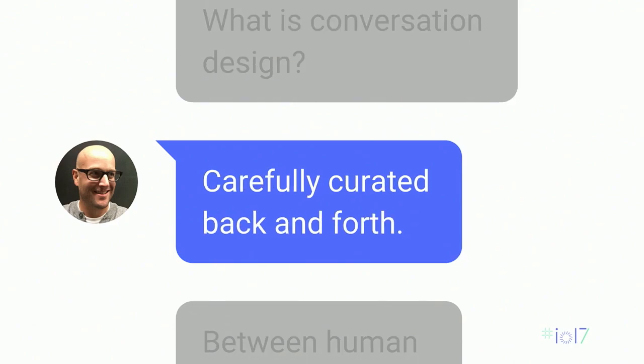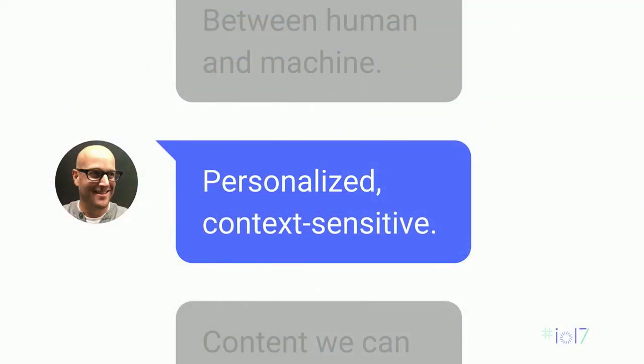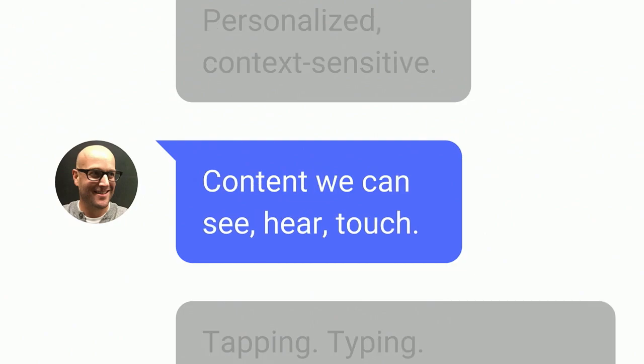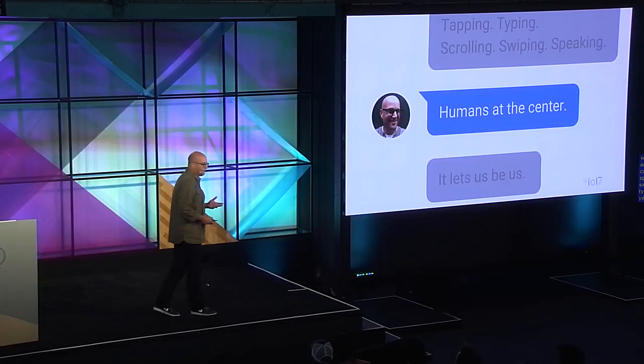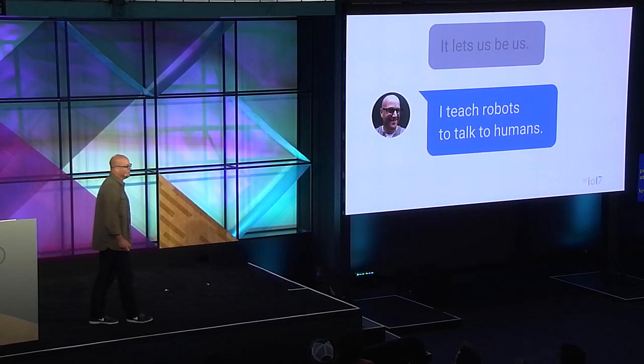A question I get a lot: what is conversation design? For me, conversation design is a carefully curated back and forth between human and artificially intelligent machine. It generates a personalized and context-sensitive experience around tasks and content — content we experience in a very visceral way. It's an immersive experience filled with things we can see, hear, and touch, content we can interact with and control by speaking, scrolling, swiping, tapping, and even typing, as announced yesterday in the keynote. It's a design practice that really puts humans at the center.